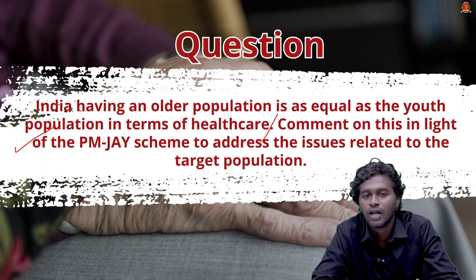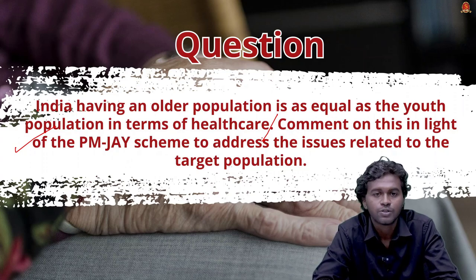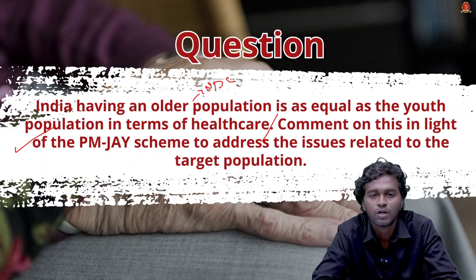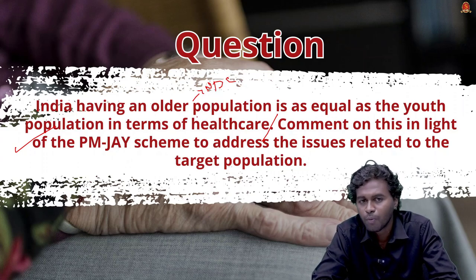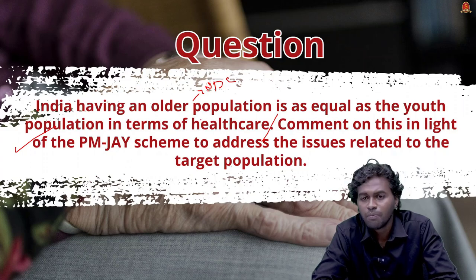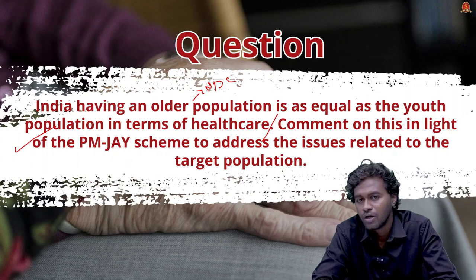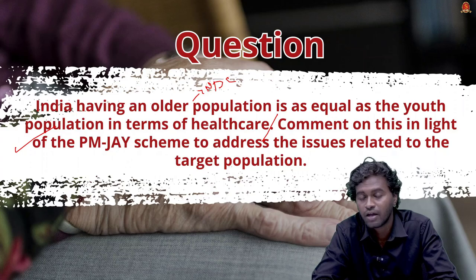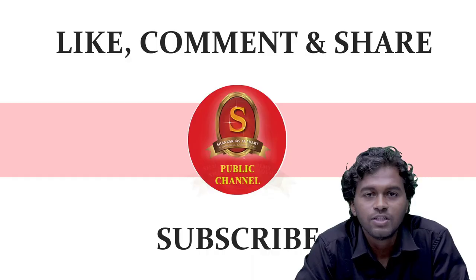For answering, divide into two parts. The first part addresses healthcare needs of older versus youth populations — older population already suffers from non-communicable diseases and other health conditions, so we need both preventive and curative measures; the youth population is relatively healthy so preventive measures are more critical. The second part addresses how far PM-JAY is successful in addressing issues faced by the elderly and other vulnerable communities, and what role this scheme plays in ensuring their social welfare. Post your answers in the comments and we will review and reply.